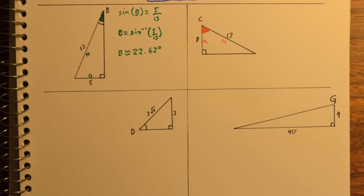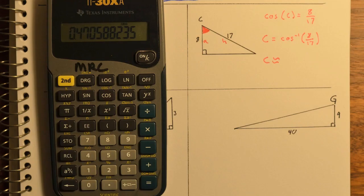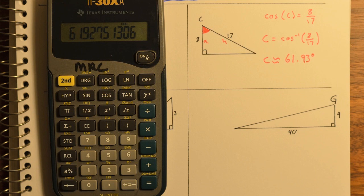The next example, we're given the adjacent and hypotenuse of angle C. And so that means we'll use the inverse cosine function. Inverse cosine of adjacent divided by hypotenuse gives us about 61.93 degrees.